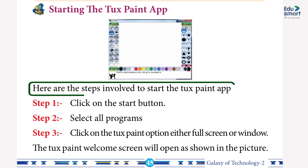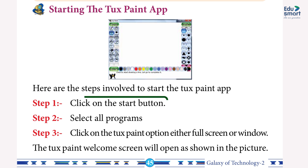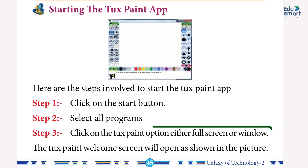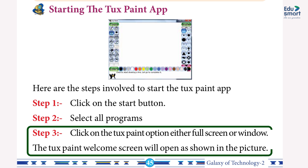Starting the Tux Paint app — here are the steps: Step 1: click on the Start button. Step 2: select All Programs. Step 3: click on the Tux Paint option — either full screen or window. The Tux Paint welcome screen will open as shown in the picture.